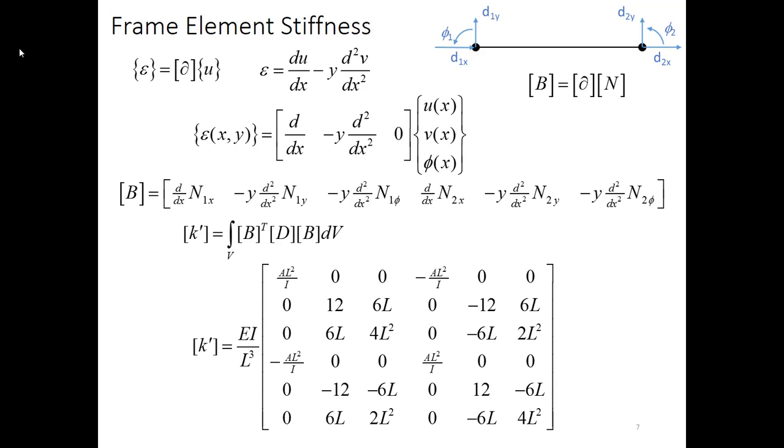However, recognize that when you take that B matrix, which has six terms, and you multiply it by its transpose, you will get a six by six matrix. And you then need to evaluate those terms inside the integral. So it's a lengthy process and we have a bit of a shortcut that we can take. Notice that the four boxes that I've outlined here actually constitute the Euler-Bernoulli beam stiffness terms. So there's actually a shortcut.